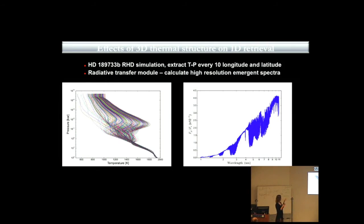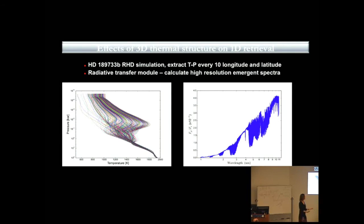What we actually did, we had a simulation of HD 189733, and we extracted TP profiles on every 10 longitude of the latitude. Then I put that in TEA, produced the chemical abundances. Then with some opacity sources, I ran it through the radiative transfer module and produced planetary spectrum or produced intensities. Then I integrated these intensities along the day side of the planet and produced this spectrum.